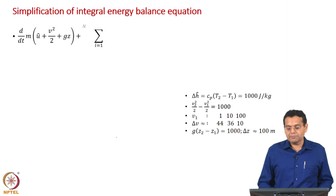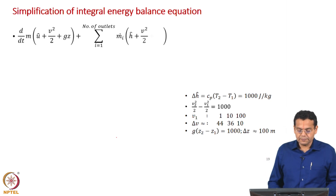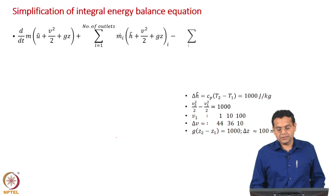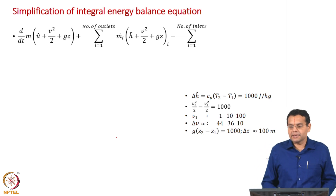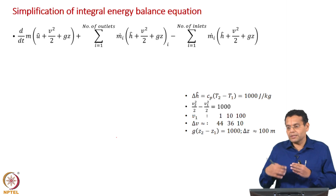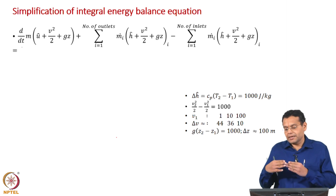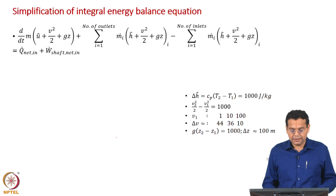Let us proceed further and see how to simplify this further. The same equation is written here, and it looks certainly simpler — we no longer have integral signs. The integral was absorbed either by assuming uniformity within the volume or across inlets and outlets, and terms are now expressed using mass flow rates.